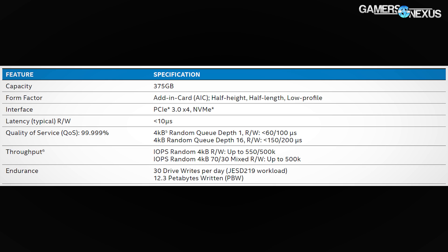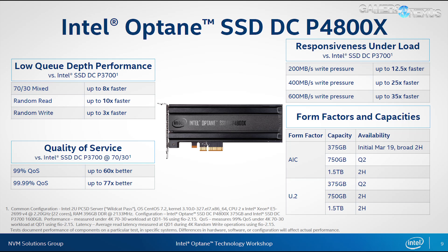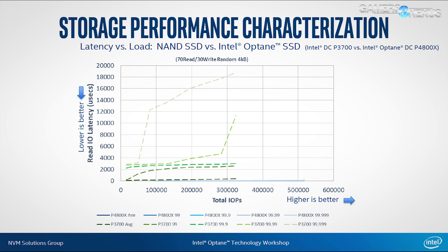The data center P4800X is the first Optane device announced and is meant for use in servers with Xeon processors and compatible motherboards — E5 V2, E7 V2, or better. Broad availability is expected in the second half of the year, with initial availability starting today. The same core technology will come to consumer drives eventually, without major architectural changes — more a matter of disabling unneeded features to reduce price.